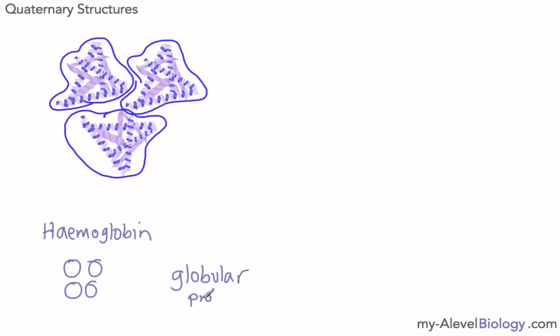But this is an example of our quaternary structure, and this in fact is what we call a globular protein. And globular proteins are involved in chemical reactions involved in the metabolism, which are all the chemical reactions that go on in the body.